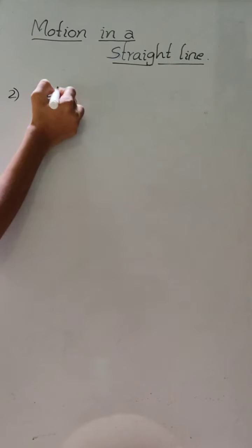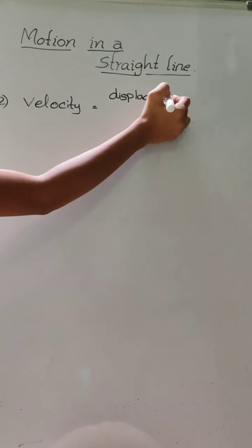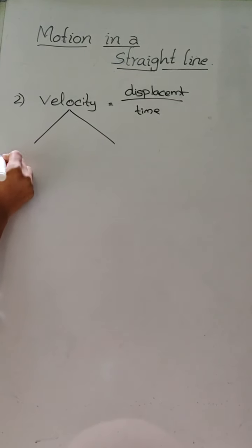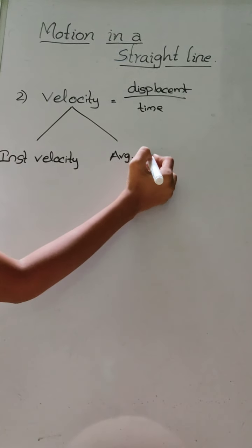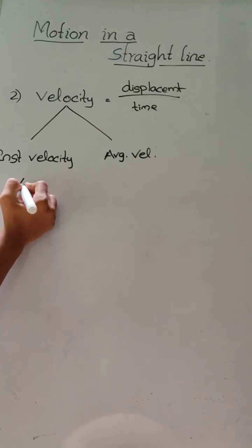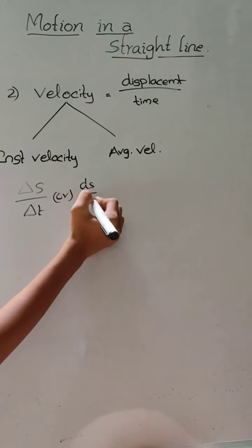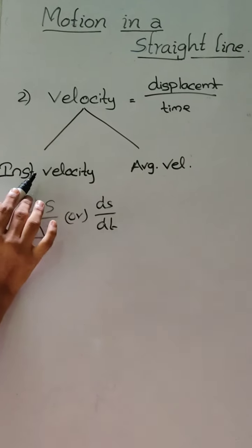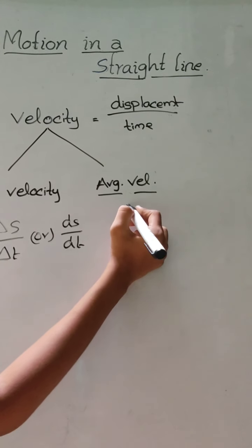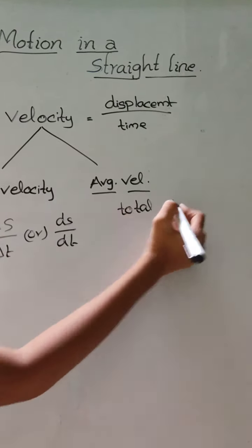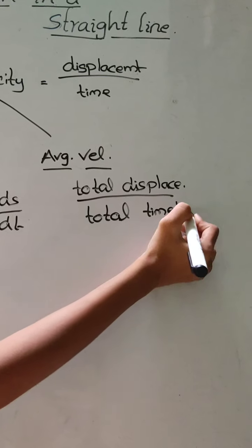The second one is velocity. The formula of velocity is equal to displacement by time taken. There are also two types: instantaneous velocity and average velocity. The formula for instantaneous velocity is delta x by delta t, or we can write it as ds by dt. It represents the rate of change of position at a particular instant. Average velocity is equal to total displacement by total time taken.